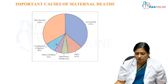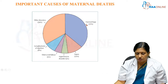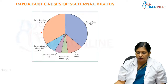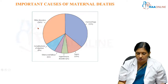The causes of maternal death include hemorrhage, sepsis, hypertension, obstructed labour, complications of abortion, and other disorders. These include both direct and indirect causes. Direct obstetrical deaths account for 75% of causes and indirect deaths account for 25%.